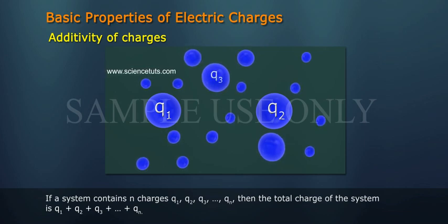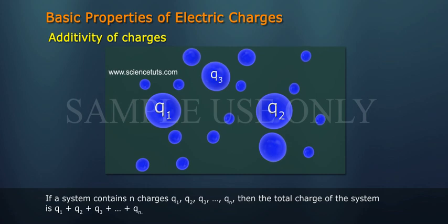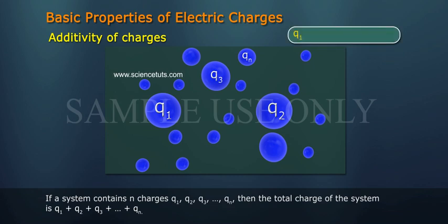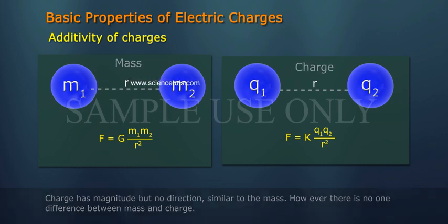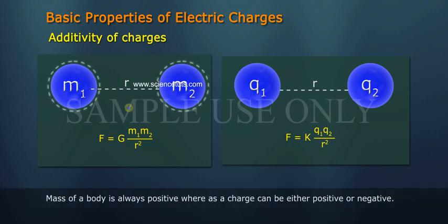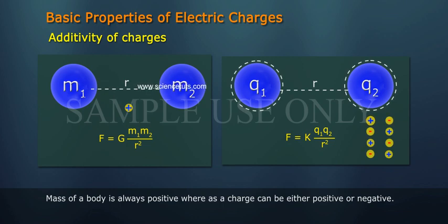Charge has magnitude but no direction, similar to mass. However, there is one difference between mass and charge: mass of a body is always positive, whereas charge can be either positive or negative.